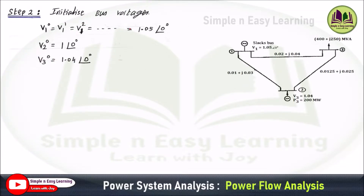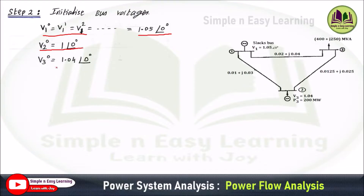Step 2: initialize all bus voltages except the slack bus. The slack bus voltage is specified as 1.05 angle 0 and remains the same throughout all iterations. For the remaining two buses, we initialize V2(0) equal to 1 angle 0. For bus 3, which is a PV bus, the voltage magnitude is specified; we initialize the angle to 0, giving V3(0) equal to 1.04 angle 0.